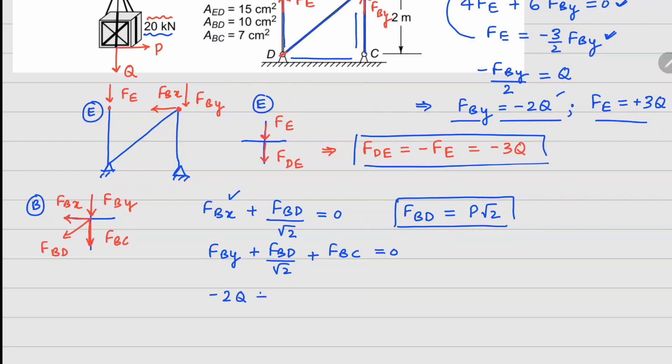If I solve this, your FBC is 2Q minus P.